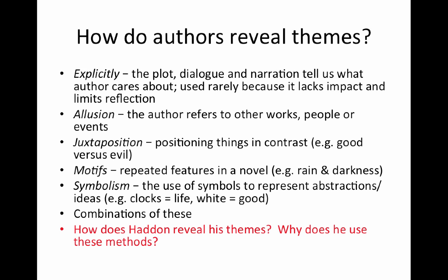How do authors actually reveal their themes? As I said, some of them do it explicitly — they come right out and tell you: 'this is a book about...' They might do that through the actual plot they choose, the dialogue and narration, simply telling you what the author cares about. This is used pretty rarely, simply because it doesn't make for very engaging and impactful writing. Authors generally want us to stop, question, and think about what they're writing, so if they simply tell us what to think, we tend not to do that.